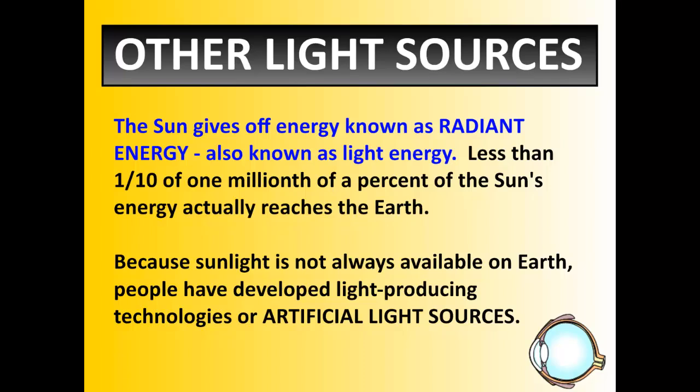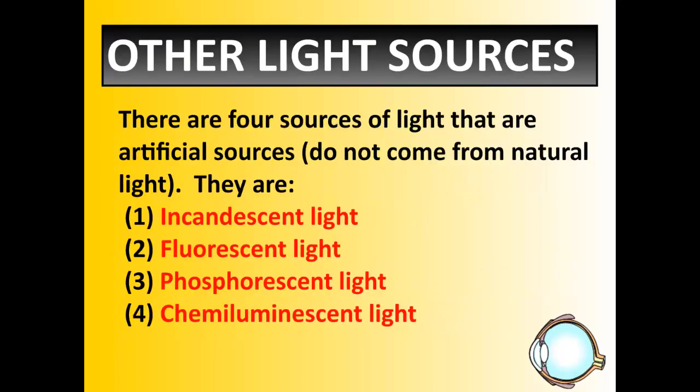Anything that's not produced by the sun, fire, or bioluminescence is an artificial light source — it's created by us. Because sunlight's not always available, we've been fortunate enough to have very bright people in the past come up with ways to produce light so that we aren't sitting in the dark all the time. There are four ways that we've produced light artificially: incandescent light, fluorescent light, phosphorescent light, and chemiluminescent light.